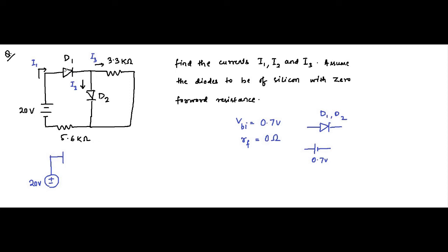For D1, the P end is connected to the positive terminal of the supply and the N end is connected to the negative terminal. So D1 is forward biased — it is on. D2 also has its P end connected to the positive terminal and N end to the negative terminal. So D2 is also forward biased — it is on. We replace D1 with its equivalent circuit of 0.7 volt, and D2 with its equivalent circuit of 0.7 volt.